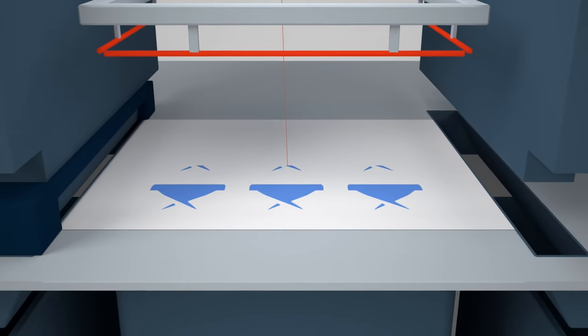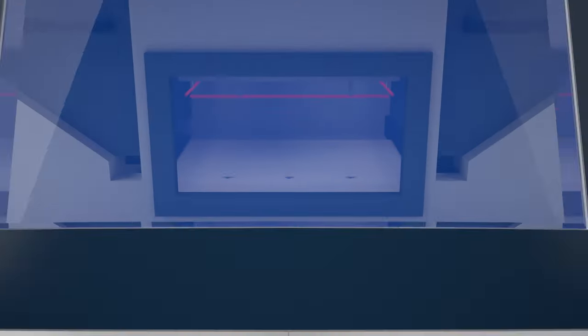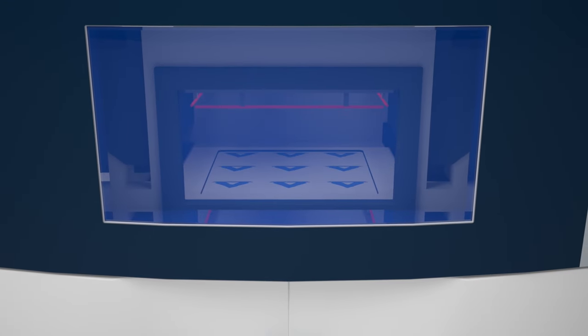During printing, the unmelted powder supports the solidified parts, which eliminates the need for dedicated support structures.